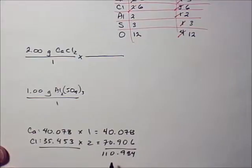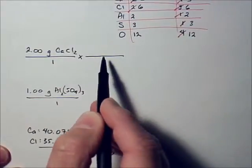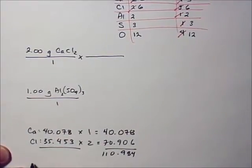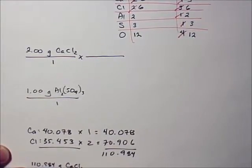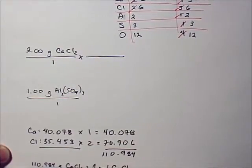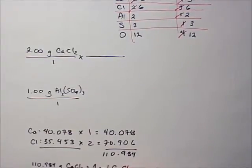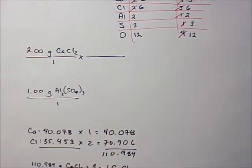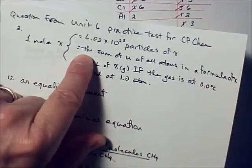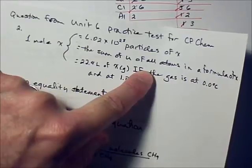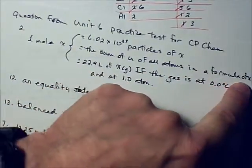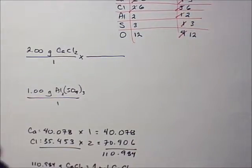Okay. So the number you get is this. But if that's all you give me, you're going to lose points because I'm going to count off for the fact that you didn't give me an equality statement because that's what you need, an equality statement to write in a conversion unit. So 110.984 grams of calcium chloride is going to be equal to one mole of calcium chloride.